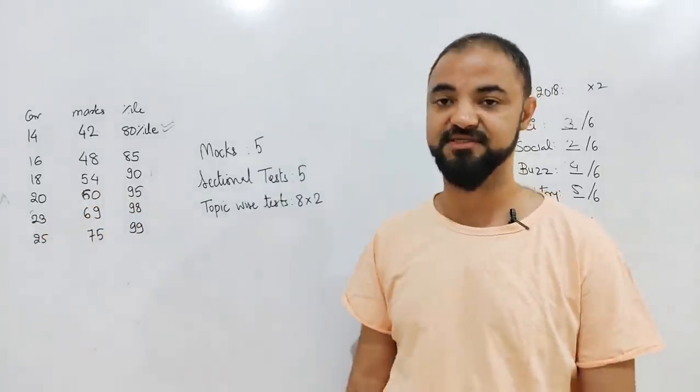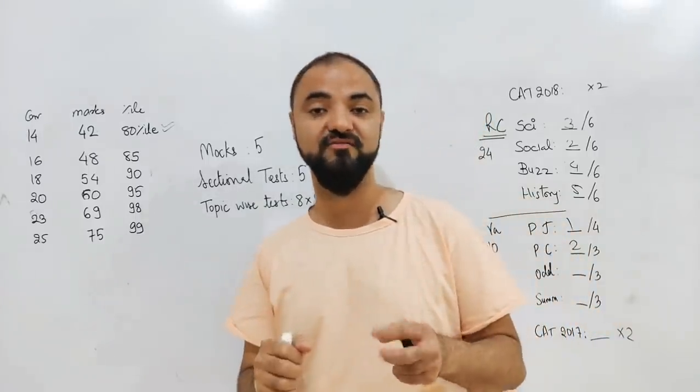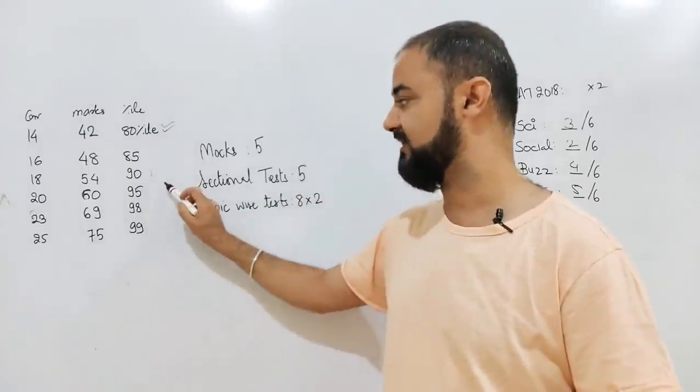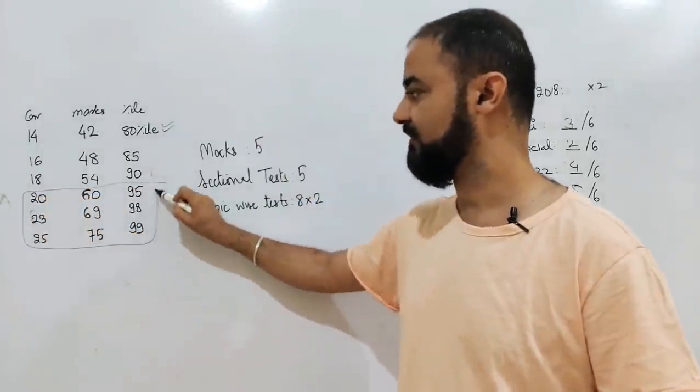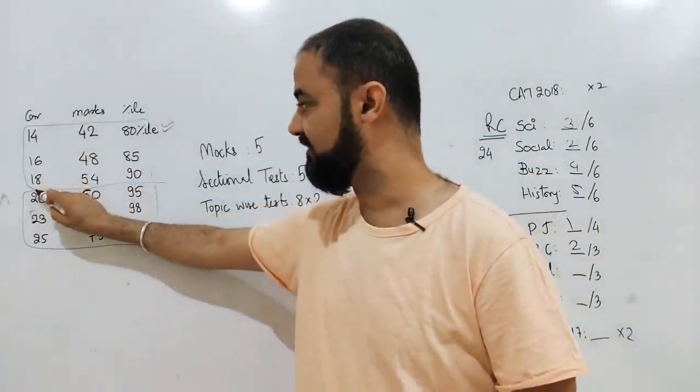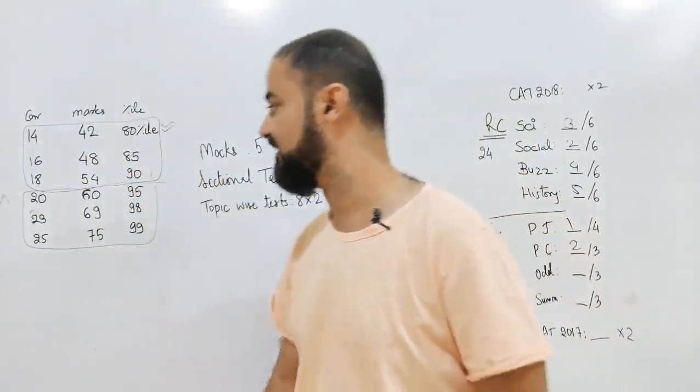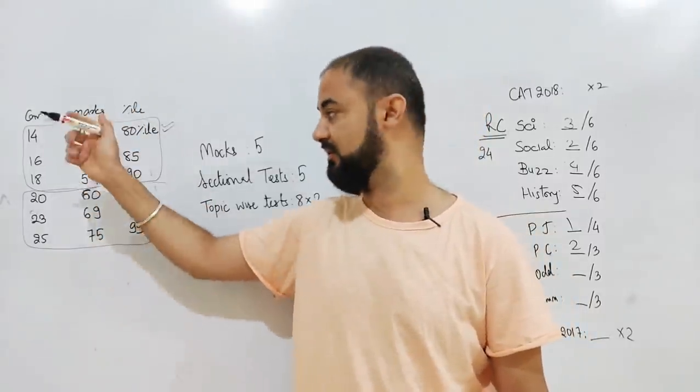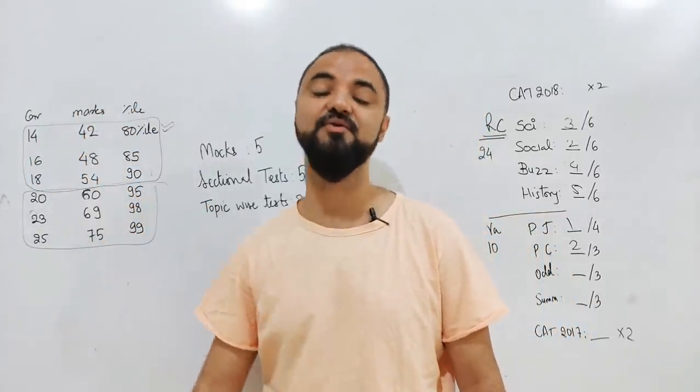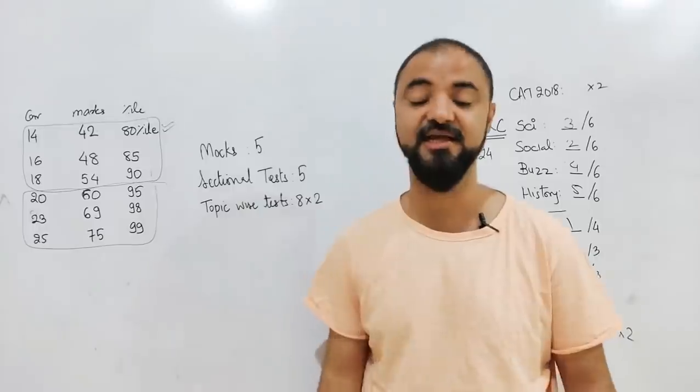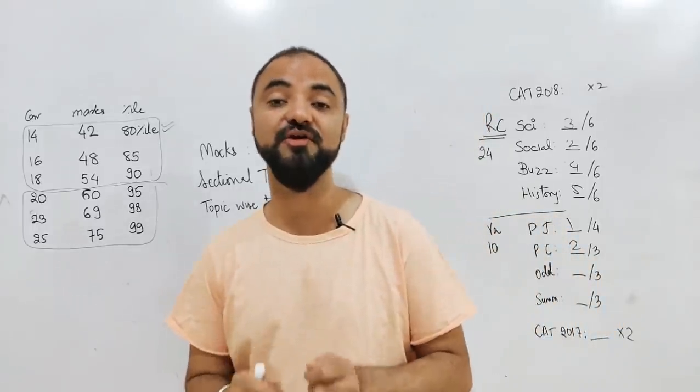95 percentile is 18 correct, 90 percentile is 20 correct, 95 percentile is 23 correct, 98 percentile, 25 correct is 99 percentile. So if you are very good in verbal or good in verbal, your target is these three. But if you're not great in verbal, like the guy who called me in the morning, your target is the first three.